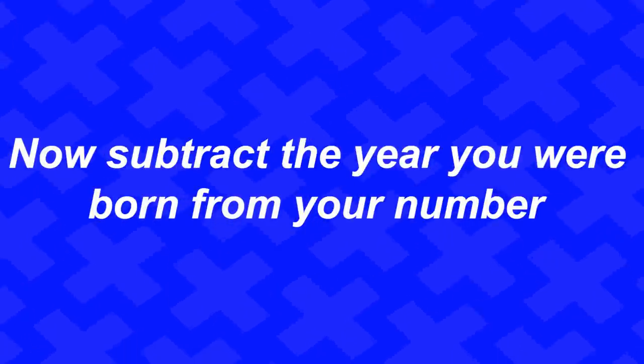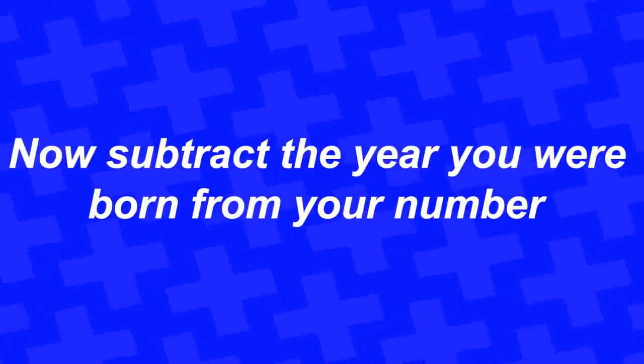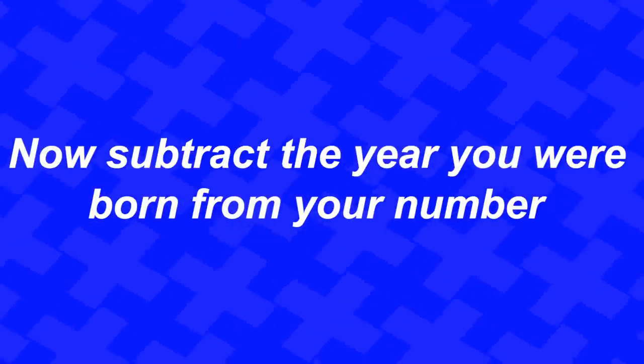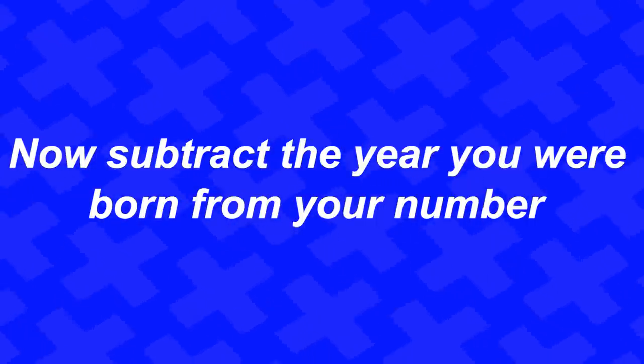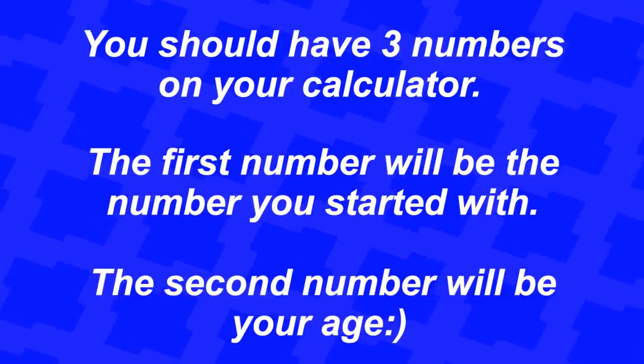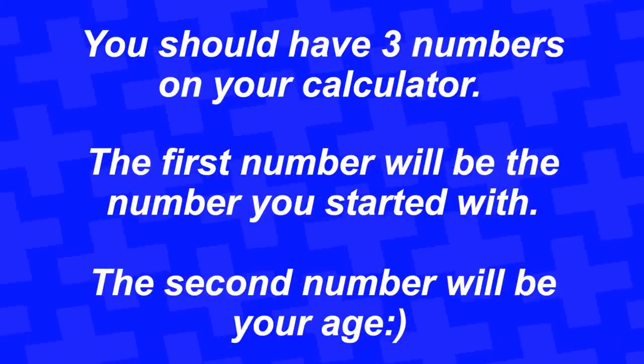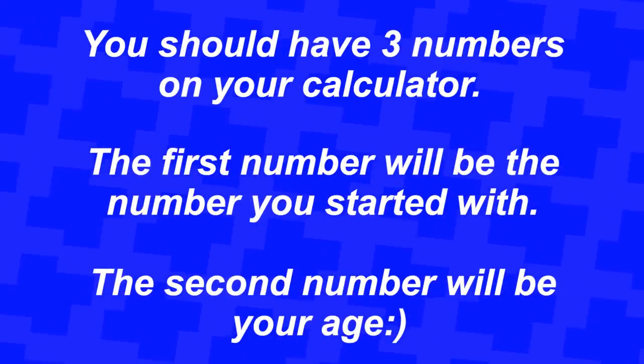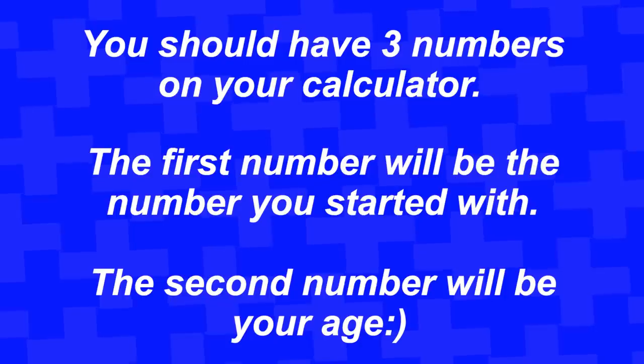Now, I want you to subtract the year you were born from your number. Alright, so there should be three numbers on your calculator, right? The first number on your calculator will be the number that you first started with. The second two numbers will actually be your age. Was I able to do this mind trick correctly? And did I show your real age? Let me know in the comments if this worked.